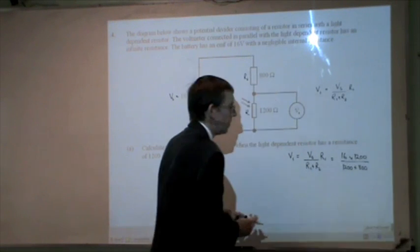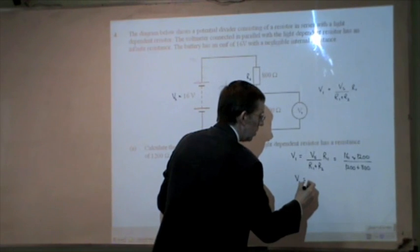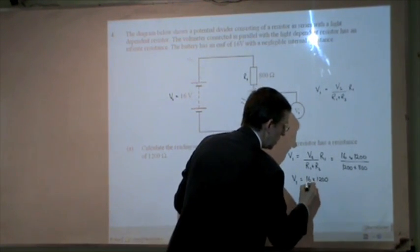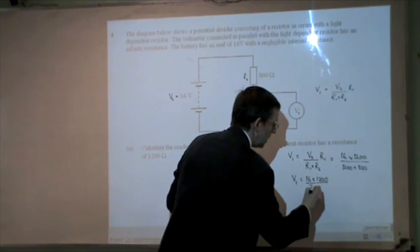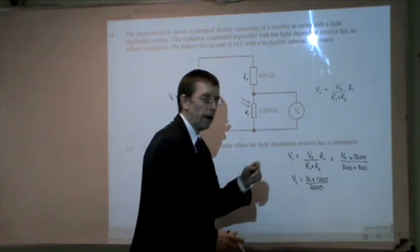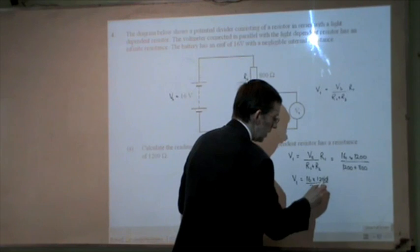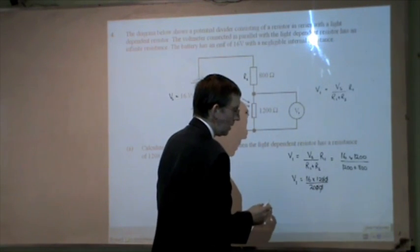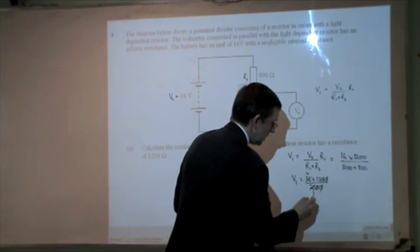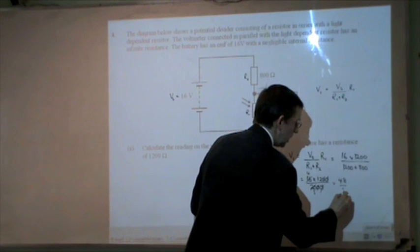So the voltage on the voltmeter V1 equals 16 multiplied by 1200 divided by 2000. This is where you'd probably get your calculator out. I can just divide top and bottom by 100. 4 goes into 16 four times. 4 goes into 20 five times. 4 times 12 is 48 divided by 5.